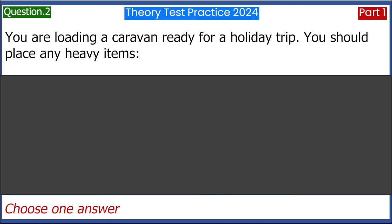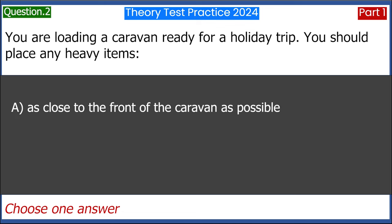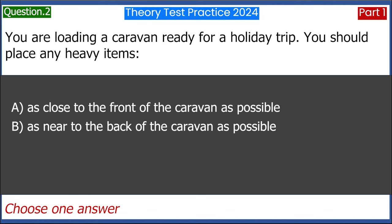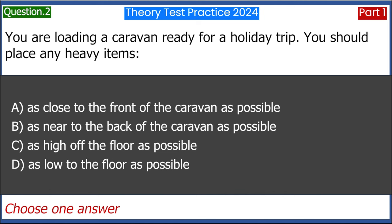You are loading a caravan ready for a holiday trip. You should place any heavy items: A. As close to the front of the caravan as possible. B. As near to the back of the caravan as possible. C. As high off the floor as possible. D. As low to the floor as possible. Answer: D. As low to the floor as possible.